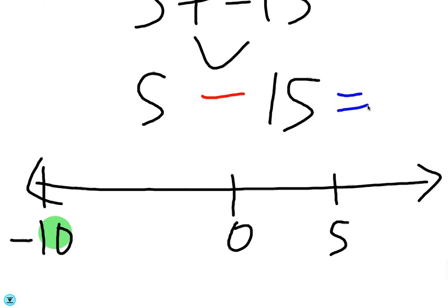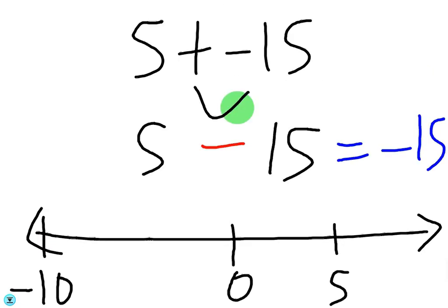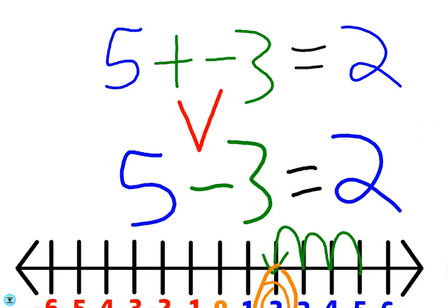So for this example, the answer is negative 15. Again, the gist of this lesson is if you're adding a negative number, you might as well just subtract it. That's the easiest way to add a negative number. If you have any other questions about starting with a positive number and adding a negative one, let me know.